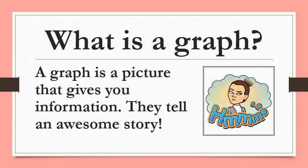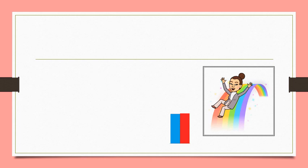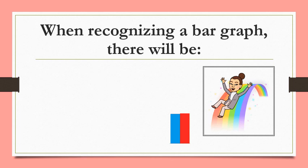What is a graph you may ask? A graph is a picture that gives you information. Graphs tell an awesome story. Now today our focus is on a special type of graph called a bar graph, and there are certain things to look for so that when you see one you will know one. Repeat after me: when I see it I will know it. Good job.